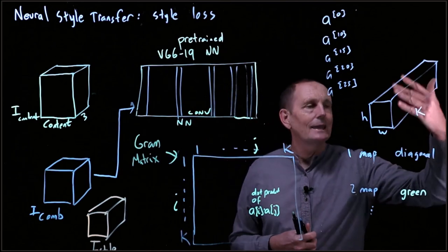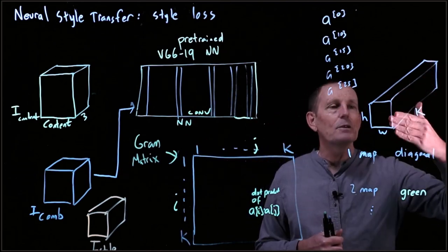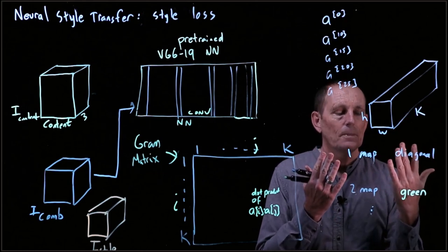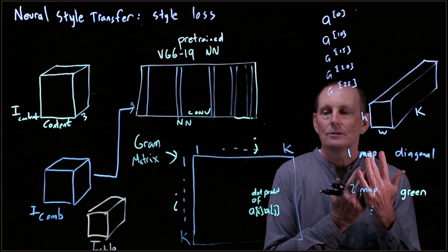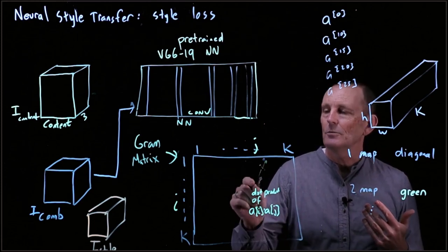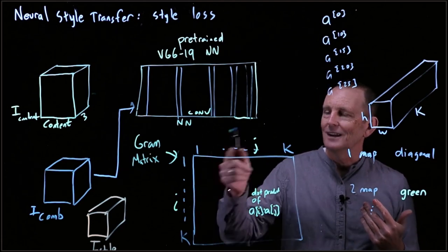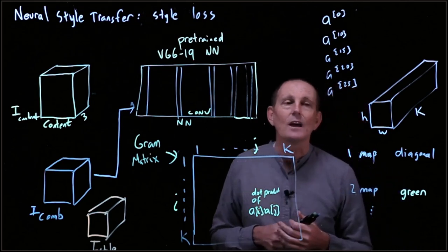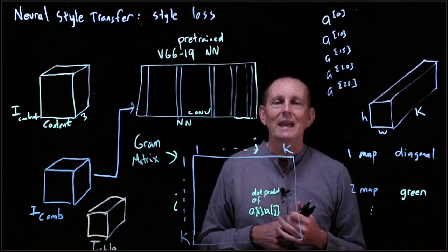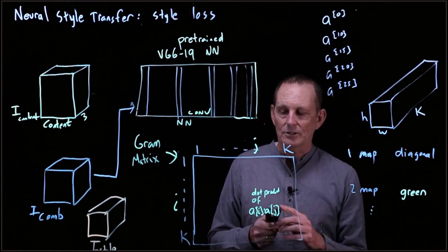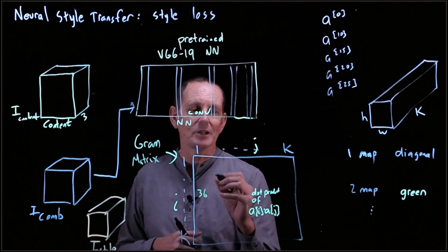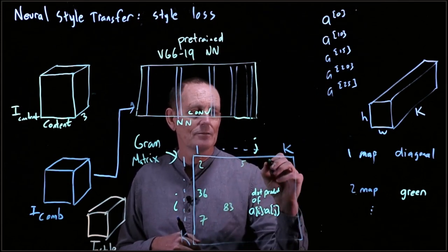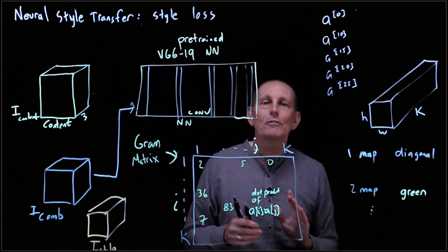To recap: we have k feature maps, and for every pair we compute the dot product and fill it into the appropriate entry in the k-by-k matrix. This is our Gram matrix. What it summarizes is which pairs of style features co-occur. The result is a matrix of numbers — for example, 36, 2, 7, 83, 5, 0 — and this is our fingerprint of style for this layer.